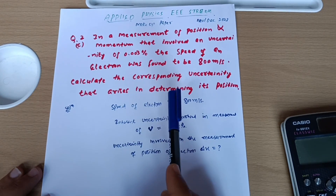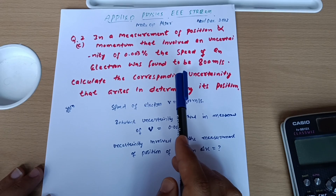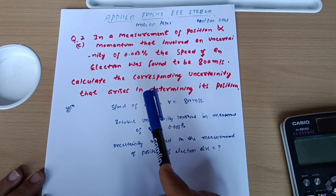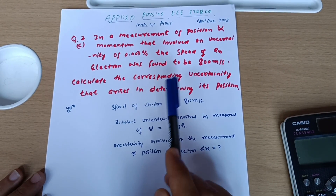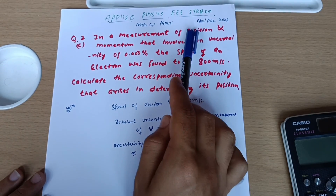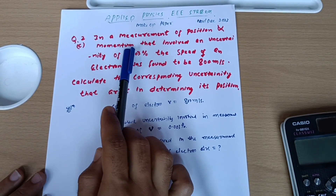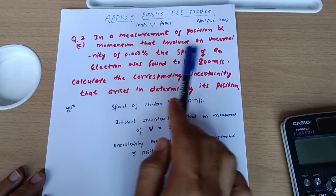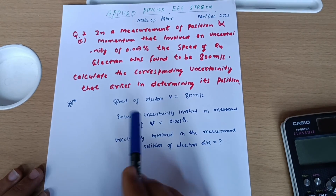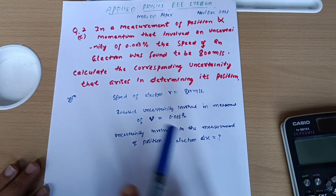This question is particularly based on Heisenberg's uncertainty principle, and you should already be aware of the statement of Heisenberg. It states that it is impossible to find out simultaneously both the position and momentum of a particle accurately. That is why there are some uncertainties which you have to calculate in the numericals.